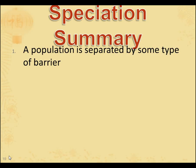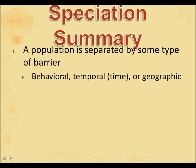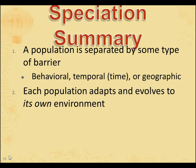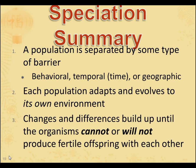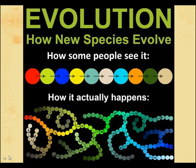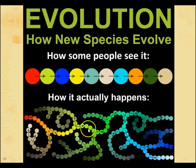To summarize speciation: a population has to be separated by some kind of barrier, whether it's behavior, time, or geography. Each population will then adapt and evolve to its own environment. And if you put them back together, those changes build up so that the organisms can't or won't produce fertile offspring with each other. Organisms change very slowly and gradually over time, but a speciation event has to imply some sort of separation — something that separates them into two different populations — which is how we end up with all the diversity of life.